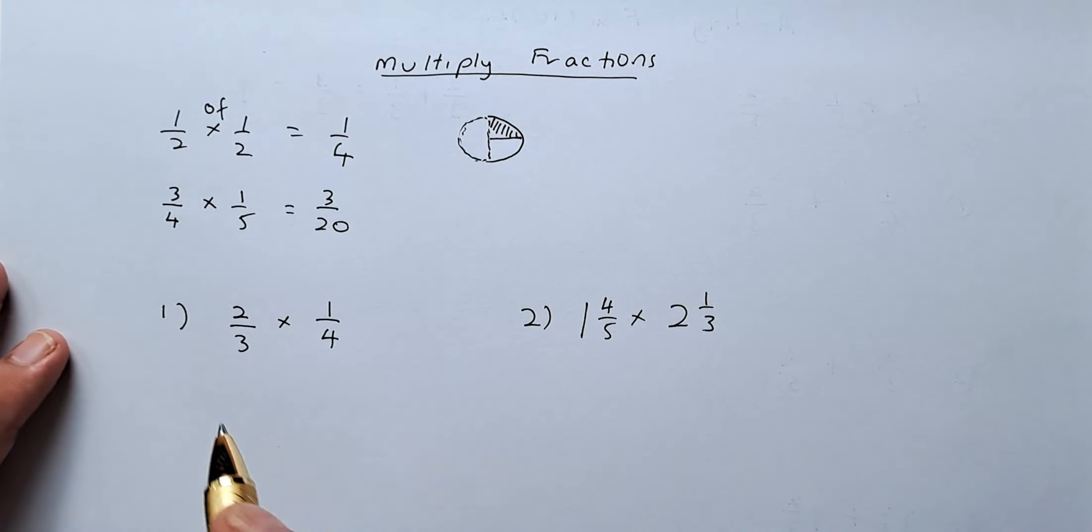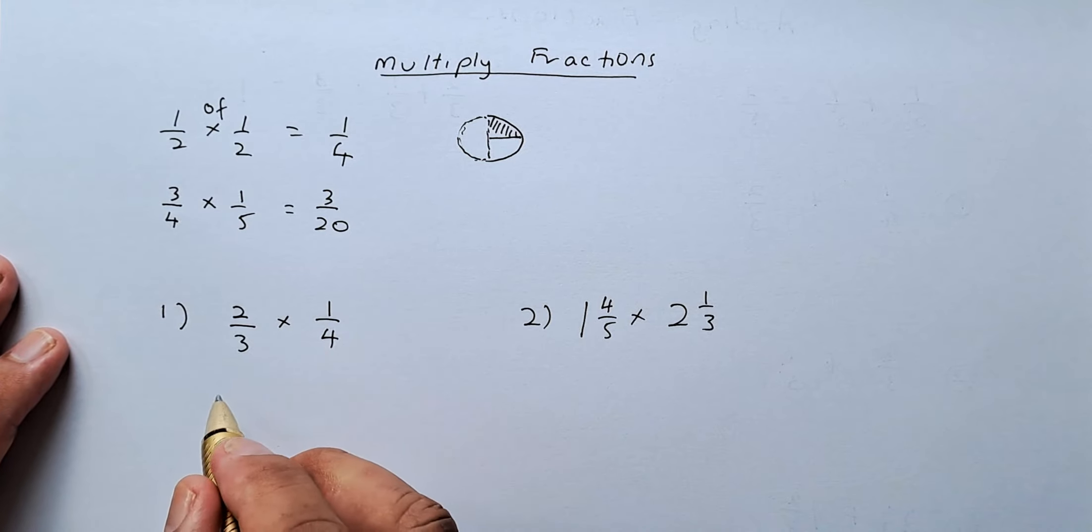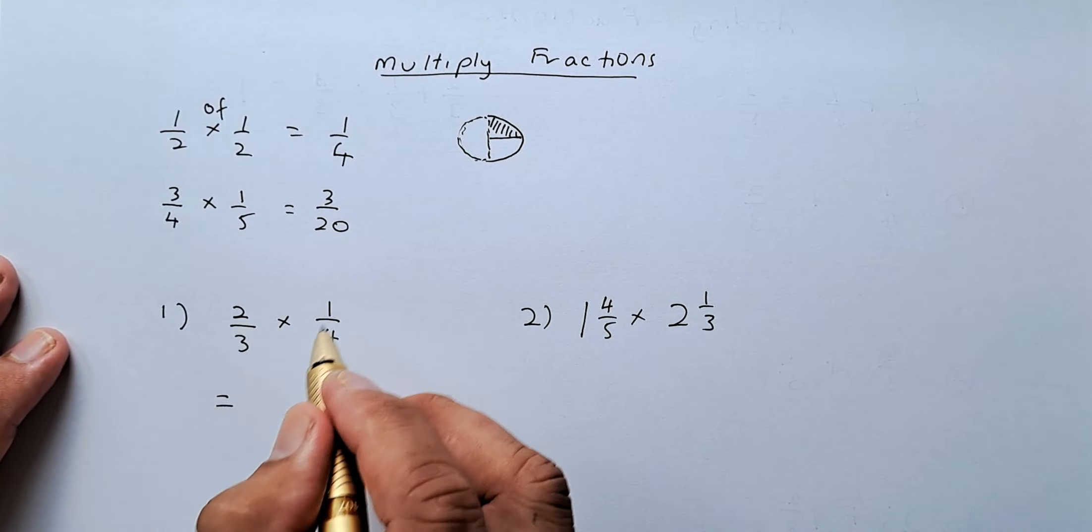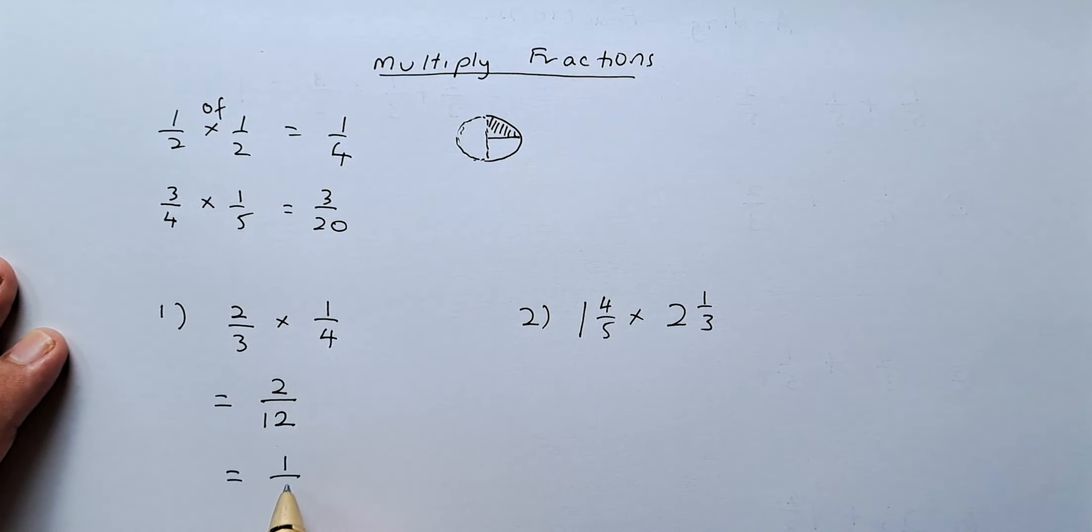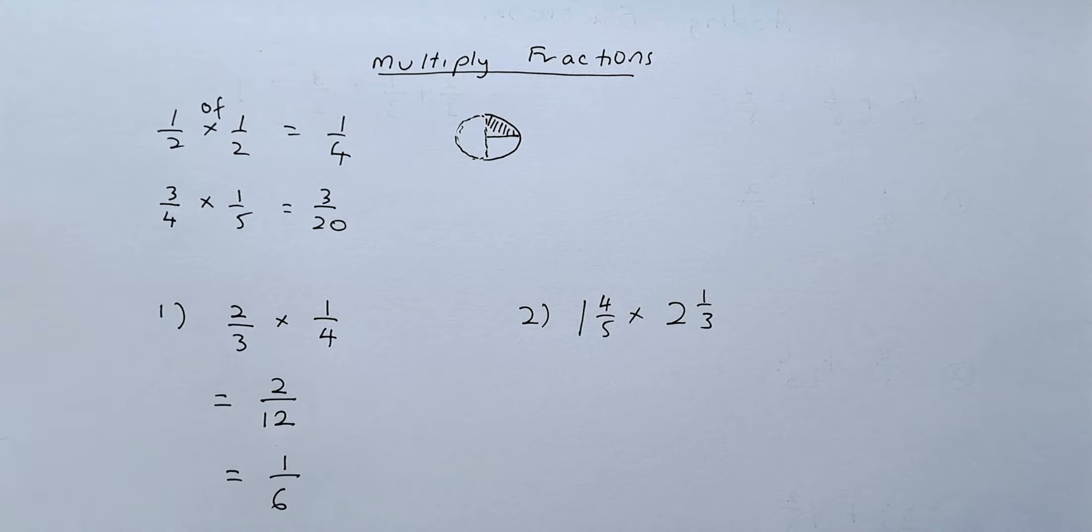So if we have an example, 2 thirds times 1 quarter, very easily you just take 2 times 1 is going to be 2, 3 times 4, the denominator is going to be 12, and simplify them is going to be 1 over 6. That is very easy.